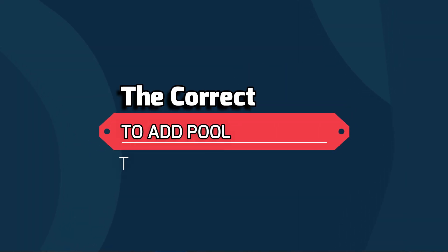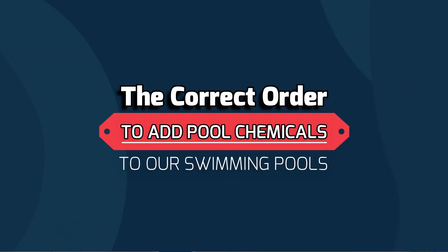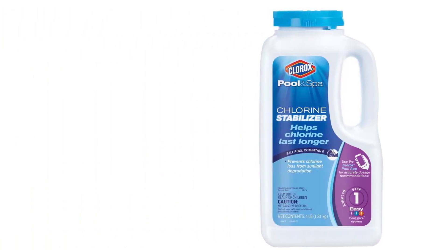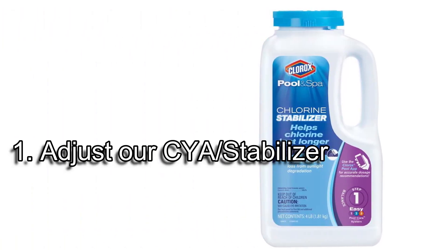Salt pools can have a stabilizer level up to 70 parts per million. So the correct order to add our chemicals is this: first, we'll want to adjust our CYA, our stabilizer. Our stabilizer is absolutely the most important chemical to get right the first time, and here's why.